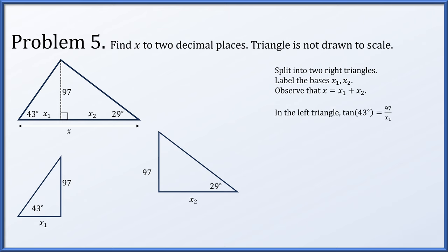Now in the left triangle, we have x1, which we're trying to solve for, and we have the height, 97. The tangent of 43 degrees is therefore 97 over x1. So x1 is 97 divided by the tangent of 43 degrees. Similarly, in the right triangle, the tangent of 29 degrees is 97 over x2, which we can solve for x2 being 97 over the tangent of 29 degrees.